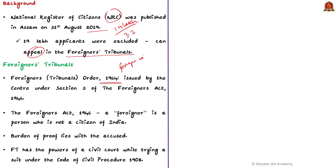These tribunals are based on the Foreigners Tribunals Order of 1964 and the objective is to identify whether a person is a foreigner or not. A foreigner is defined as one who is not a citizen of India. In order to prove citizenship, the individual has to provide evidence and the tribunals decide accordingly. The burden of proof lies with the accused. These tribunals have the power of a civil court while trying a suit under the Civil Procedure Code of 1908.